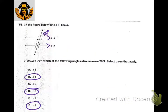If line A is parallel to line B, angle 4 is congruent, angle 6 is congruent, and angle 8 is congruent — because of vertical angles, then alternate interior angles, then vertical angles again.